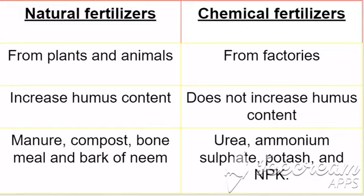Chemical fertilizers are obtained from factories and do not increase the humus content. Examples include urea, ammonium sulfate, potash and NPK.